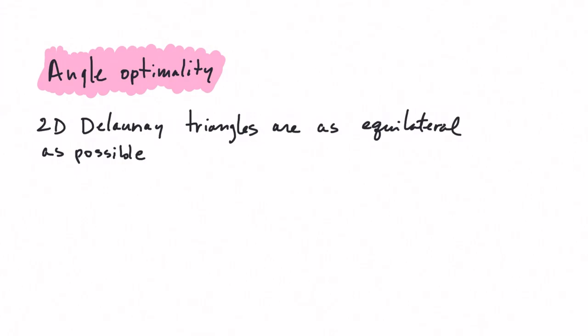We know that in 2D, the Delaunay triangulation will contain triangles that are as equilateral as possible. That is, we will create triangles that are fat. Given four points, the diagonal yielding the largest minimum internal angle is the Delaunay diagonal.